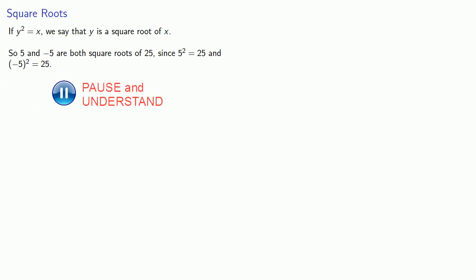This isn't actually a new idea. You've already seen this before in the context of square roots. If y squared equals x, we say that y is a square root of x. So 5 and negative 5 are both square roots of 25 since 5 squared is 25 and negative 5 squared is 25. But in order for square root of x to be a function, we need to choose a branch.